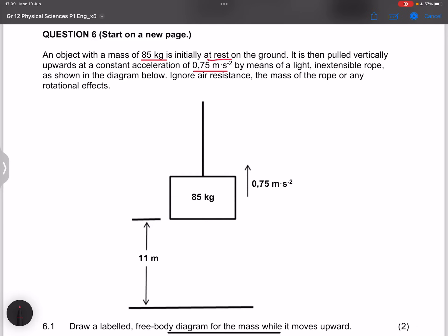They said by means of a light inextensible rope as shown in the diagram below, ignore air resistance, the mass of the rope, or any rotational effects. So they say draw a labeled free body diagram for the mass.